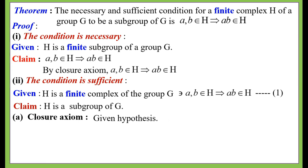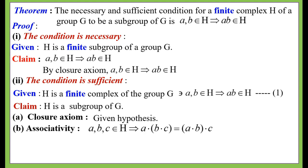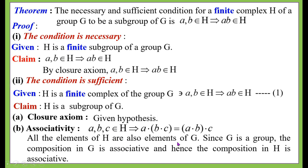Therefore it is enough to prove only three remaining axioms: associativity, identity, and inverse. For the associative law, a, b, c ∈ H implies (a·b)·c = a·(b·c). All elements of H are also elements of G, since H is a finite subset of G. Since G is a group, the composition in G is associative, and hence the composition in H is also associative.